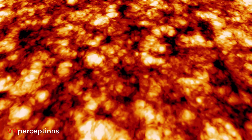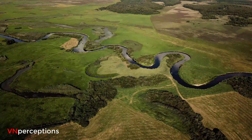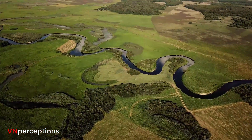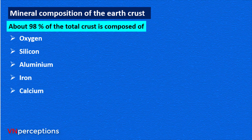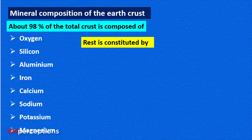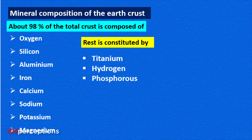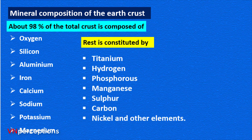About 98% of the total crust of the earth is composed of oxygen, silicon, aluminium, iron, calcium, sodium, potassium, magnesium, and the rest is constituted by titanium, hydrogen, phosphorus, manganese, sulfur, carbon, nickel and other elements.